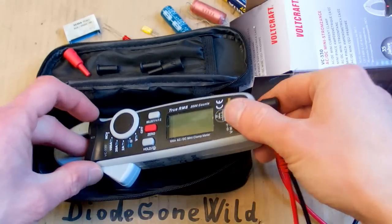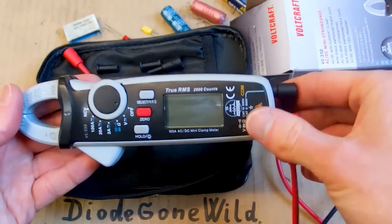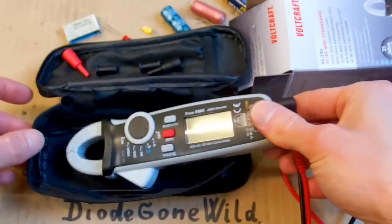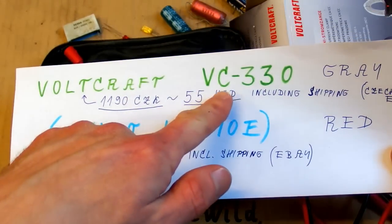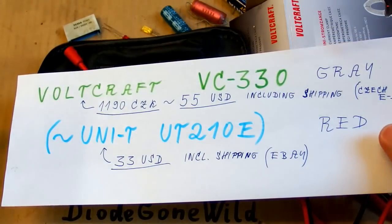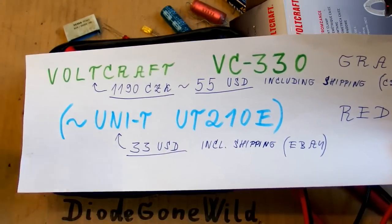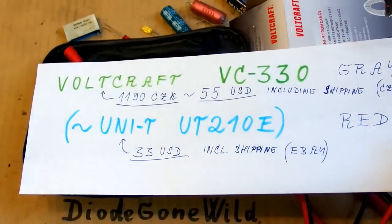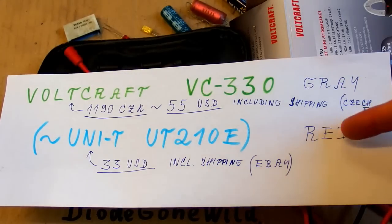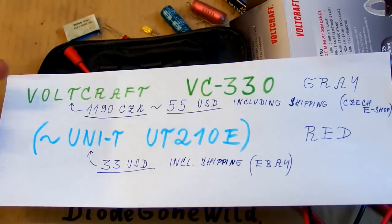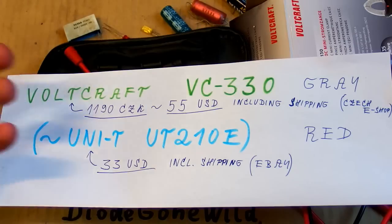In the last video I was showing you my new clamp meter, which turned out to be quite a nice one. It's Voltcraft VC330 and I found out that it's more or less the same as Unit UT210E. It's just a different color, different type number and different brand name, but it's basically the same.